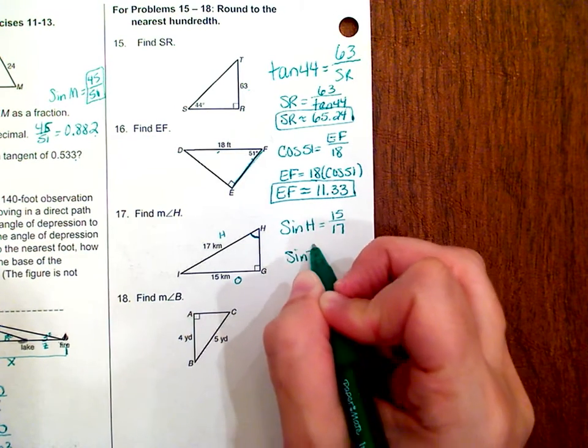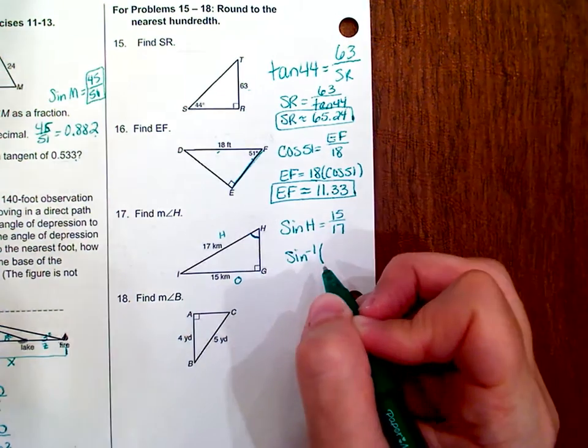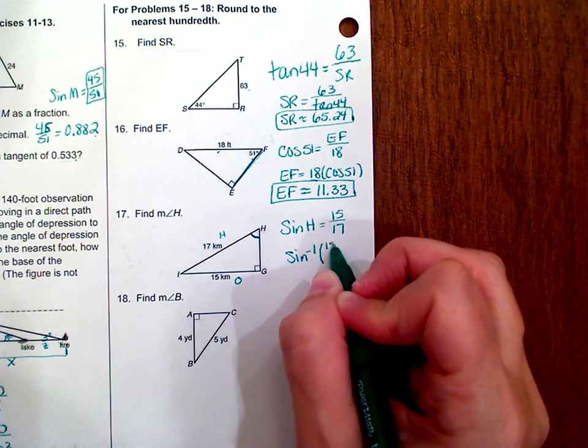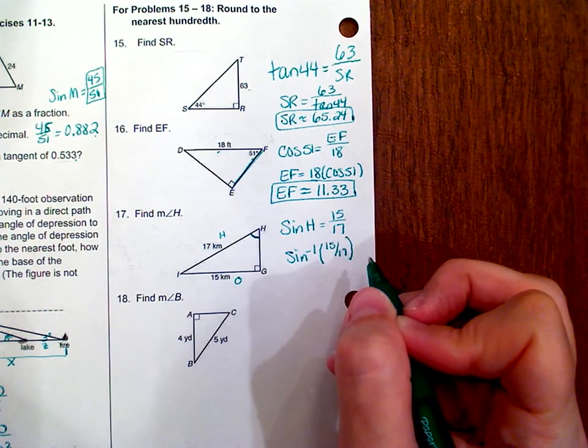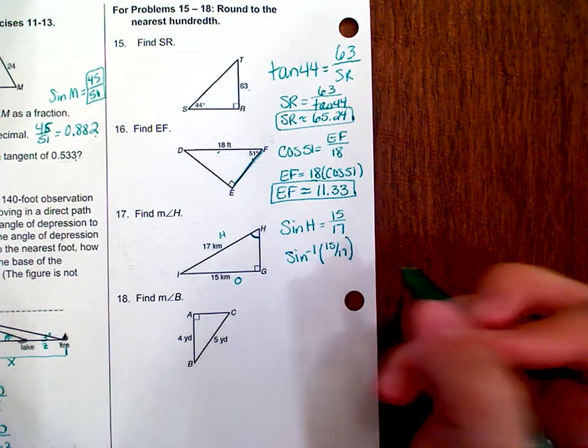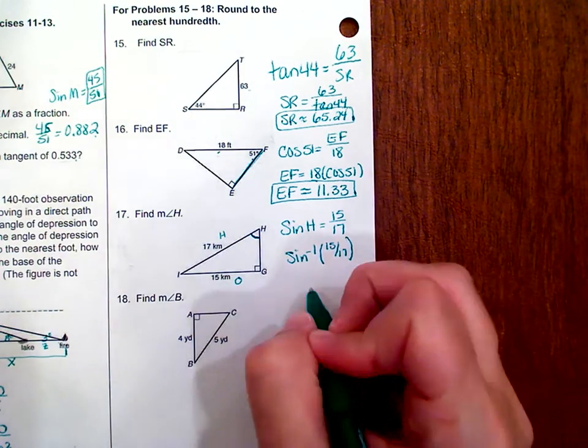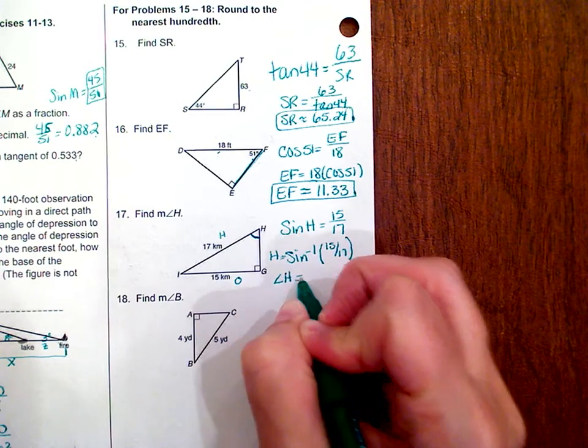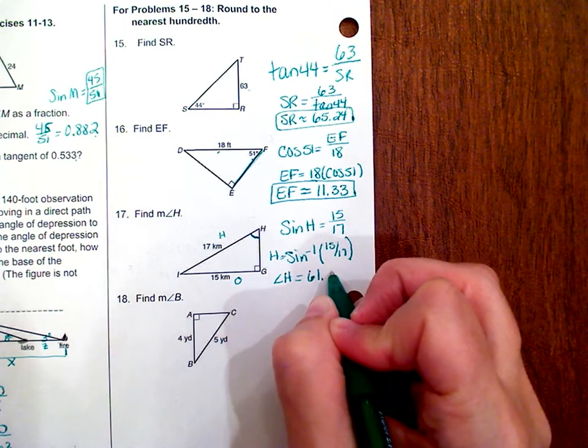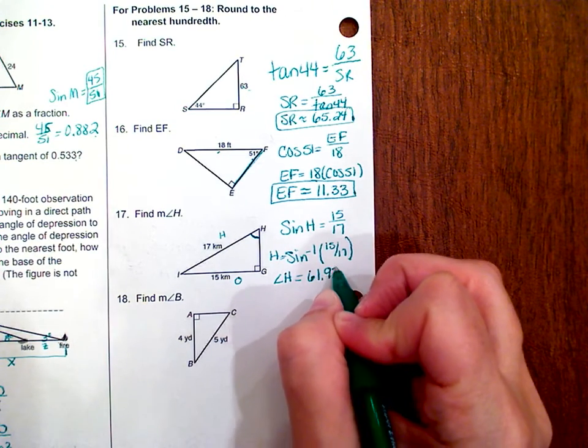In your calculator, you're going to do second sine, which brings up that inverse, and then we're going to type in that ratio, 15 over 17. Rounding to the nearest hundredth, angle H is equal to 61.93 degrees.